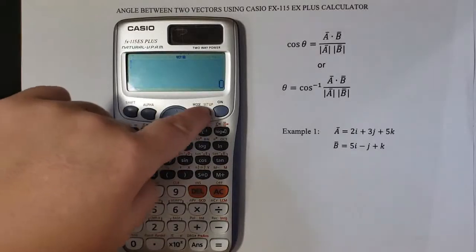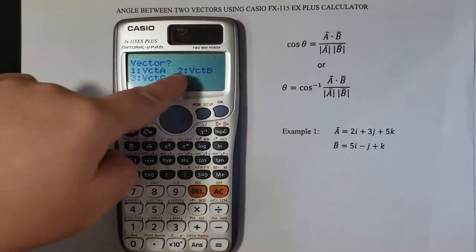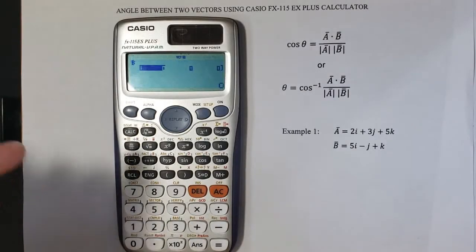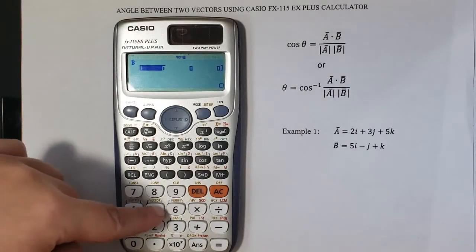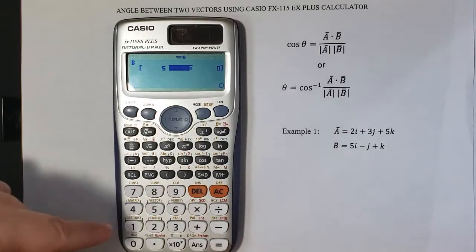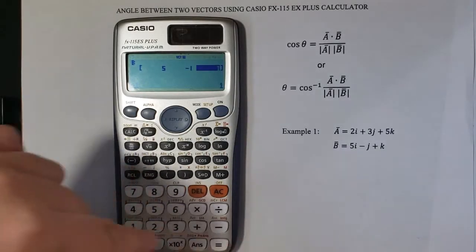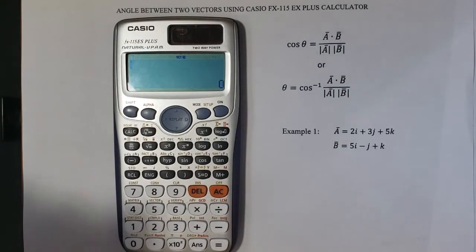Now mode again, 8 and now 2 for vector B and then 1 for the three directions. We have 5 equal minus 1 equal, 1 equal. All clear button to save.